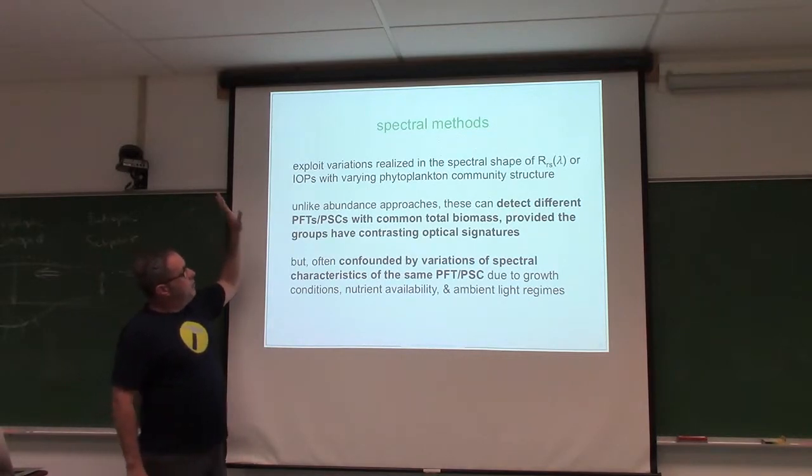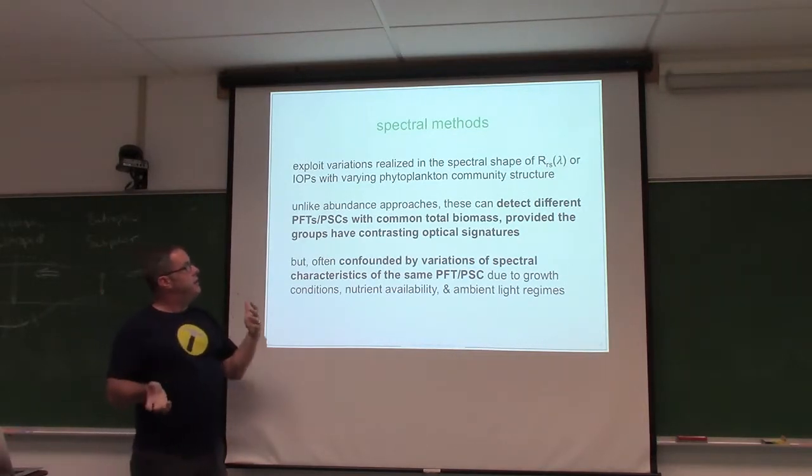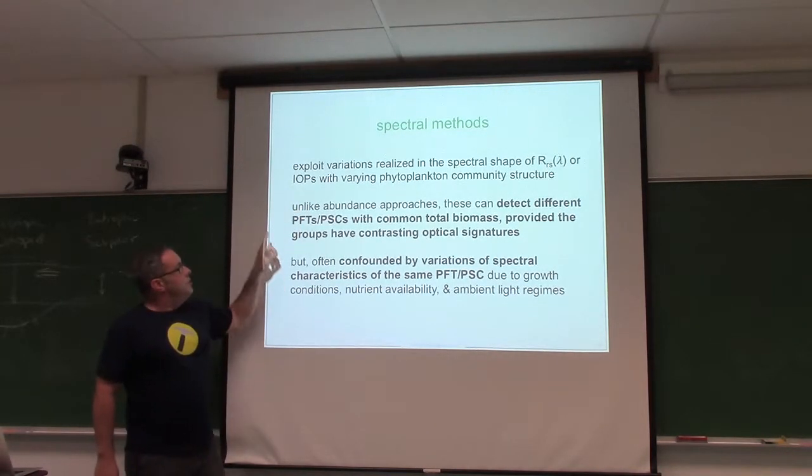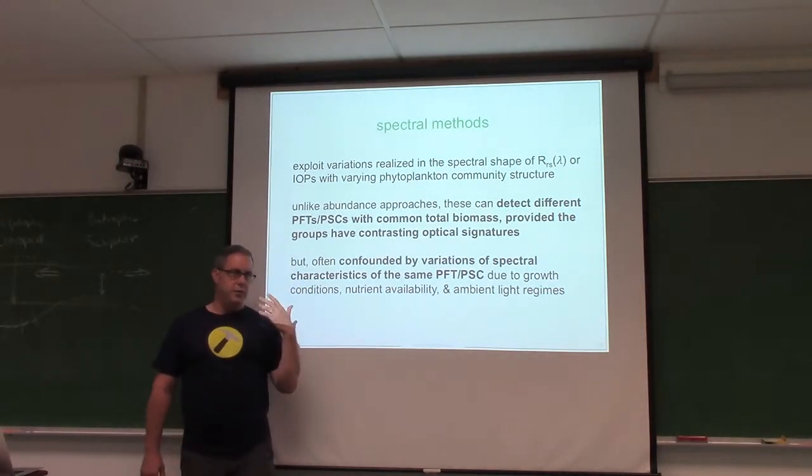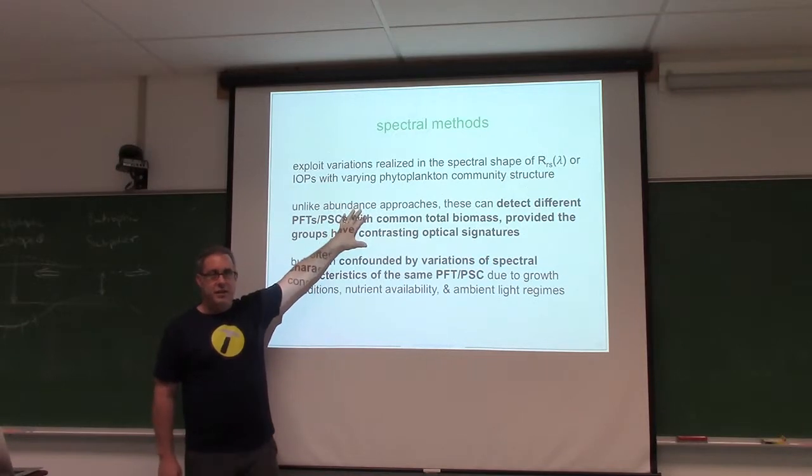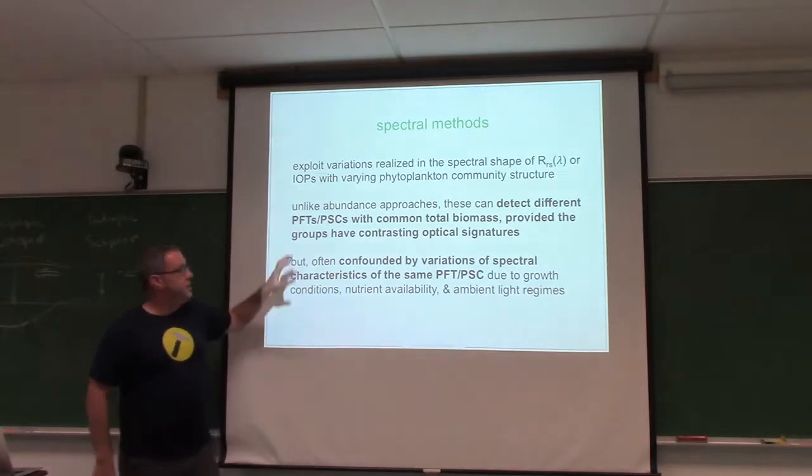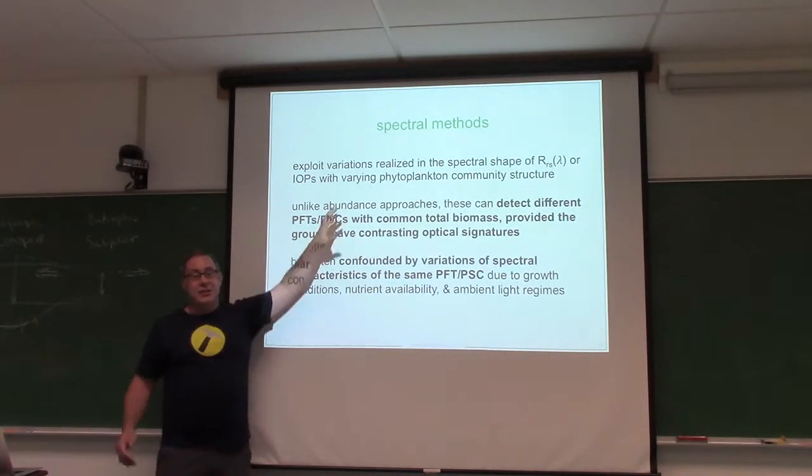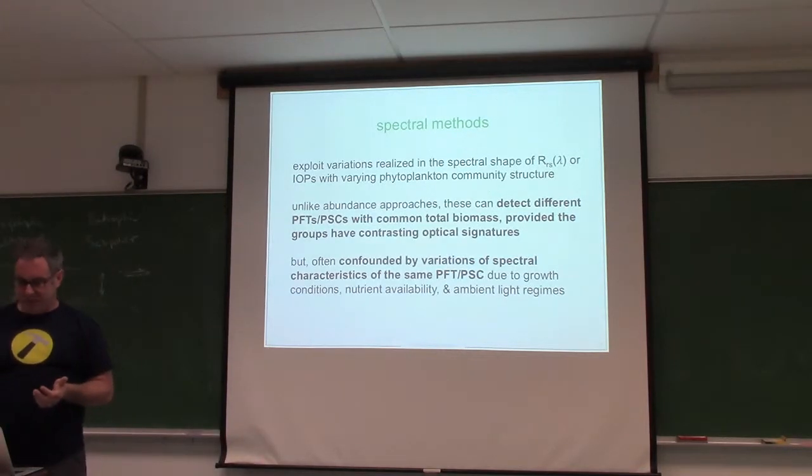All right, so moving on to spectral methods. In this case, we're looking at variations realized in the spectral shape of something from the satellite, assuming that it varies with the phytoplankton community structure in that pixel. Unlike abundance approaches, you can detect different size classes and functional types with a common total biomass here. So with those abundance approaches, say chlorophyll is equal to 1, there's only one answer. And here, your combination of IOPs can create an RRS spectra that leads to a chlorophyll of 1, but then you can have a different combination of IOPs that gets you to the same place. And this is why, moving forward, general consensus is this is becoming more powerful. But unfortunately, what helps these along, that is all those spectral variations, can also confound the answer. So it's not the perfect solution, but it is progress.